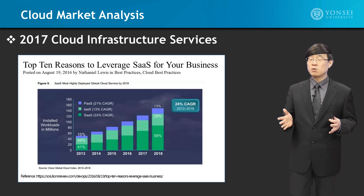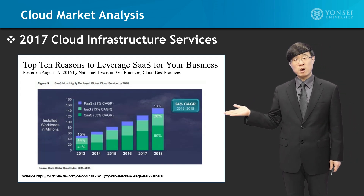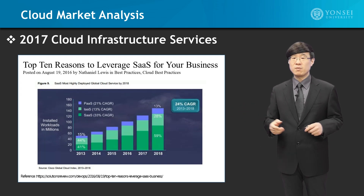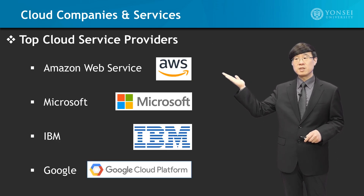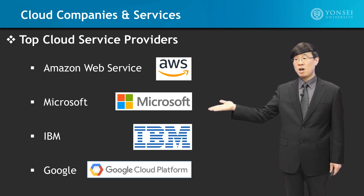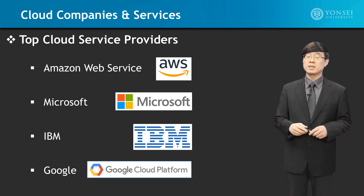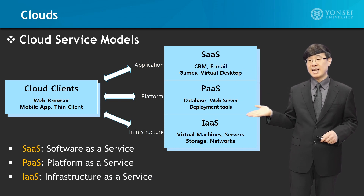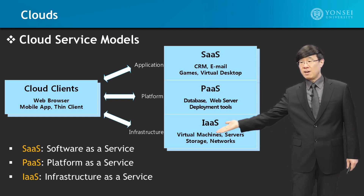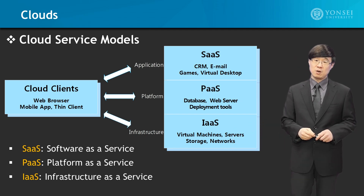Then we will go into cloud computing technology, looking into details of the overall market share, the major services, and product categories. We will focus on the big four, which is Amazon Web Service, Microsoft, IBM, and Google, although we will talk about the overall technology groups. In terms of SaaS, PaaS, and IaaS, which we have software as a service, platform as a service, and infrastructure as a service.